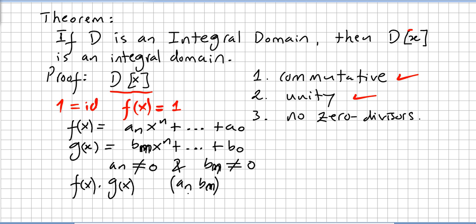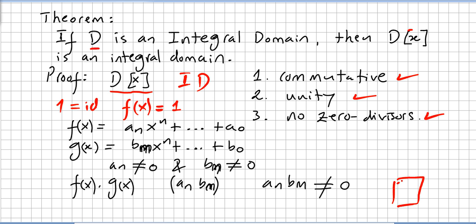By definition, f(x) times g(x) will have leading coefficient aₙ·bₘ. Since D is an integral domain, aₙ times bₘ is going to be different from zero. So this proves that it has no zero divisors, because the leading coefficient aₙ·bₘ — both different from zero — means when you multiply f(x) times g(x) you're not going to get zero. We checked commutativity, unity, and no zero divisors, so this ring of polynomials is also an integral domain. Proved.